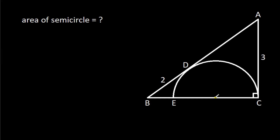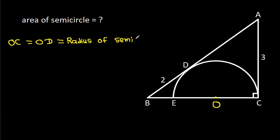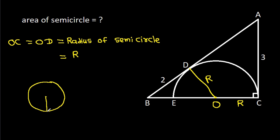Suppose the center of the semicircle is O. Then OC will be equal to OD, and that will be the radius of the semicircle. Suppose R — OC is R and OD is R. In any circle, the radius and tangent are perpendicular to each other, so this angle will be 90 degrees.